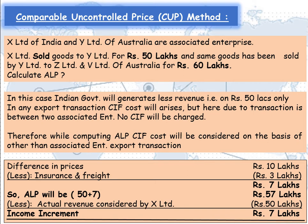The actual revenue considered by X Limited in its books is Rs 50 lakhs. Therefore, income will be increased by Rs 7 lakhs. X Limited has to increase their sales in their books by Rs 7 lakhs and also pay tax on Rs 7 lakhs.